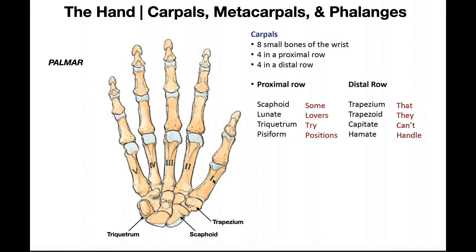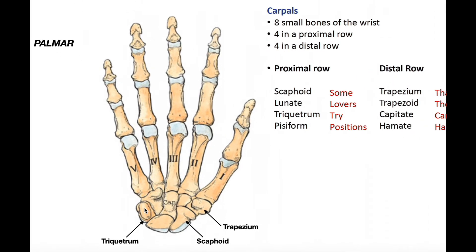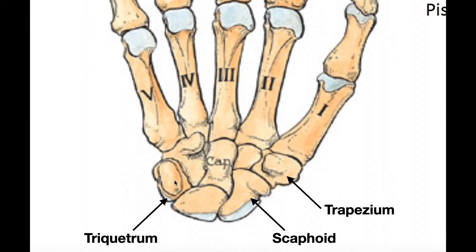Notice this bone here is actually metacarpal one. When we start naming the carpal bones, we start with the thumb side and we'll start with the proximal row. The first bone right here is the scaphoid bone. As we go toward the pinky side, or toward digit five, this one is lunate. Then this one right here is triquetrum. There's a little bone on top of triquetrum, and this one is called the pisiform — a little bit smaller, it's actually sitting on top of the triquetrum.